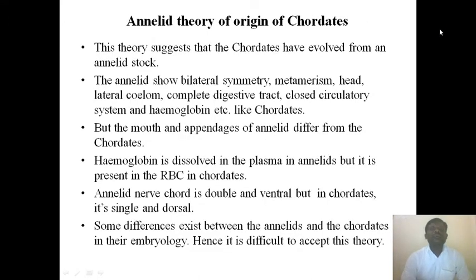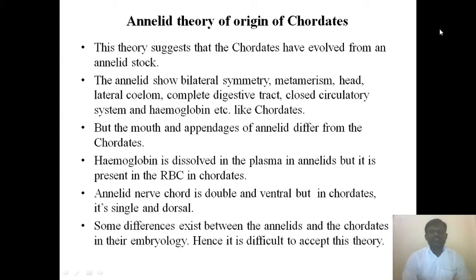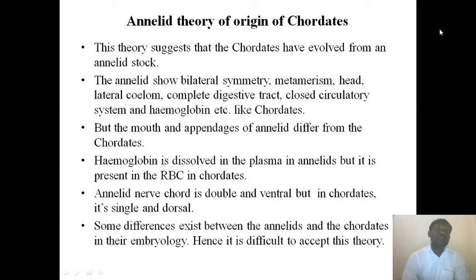The next theory is the Annelid theory of the origin of chordates. This theory suggests that chordates have evolved from an annelid stock — that is, from phylum Annelida. Annelids show bilateral symmetry, metamerism, head laterals, a complete digestive tract, a closed circulatory system, and hemoglobin — characters similar to those of chordates. However, hemoglobin is dissolved in the plasma in annelids, whereas in chordates it is present in red blood cells.